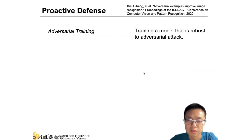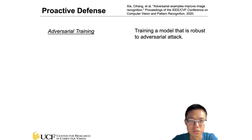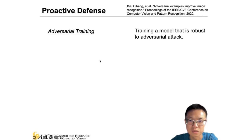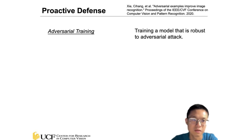So those methods introduced some passive defense mechanisms — we do some manipulation on the input but don't specifically change the machine learning model. For proactive defense, we want to change or modify the model so that it becomes more robust to adversarial attacks.